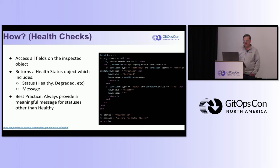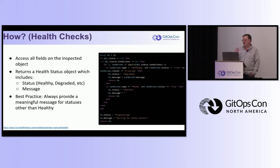To create a custom health check: a health check can access all of the fields on the object you're checking. You can use Lua to check the status, spec fields, or metadata as needed. What you want to do in that Lua script is return a health status object back to Argo CD consisting of two things: the status - is the app healthy, progressing, degraded - and a message that provides additional information to the user. Best practice: always provide a meaningful message when returning a status other than healthy. Nothing is more annoying than seeing 'this is degraded' with no message.